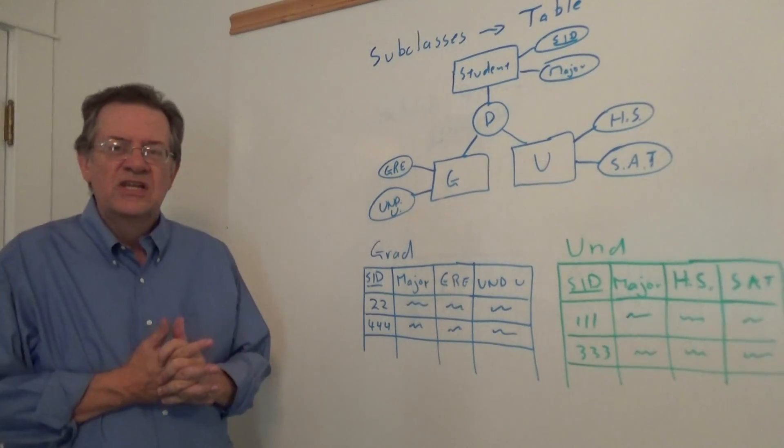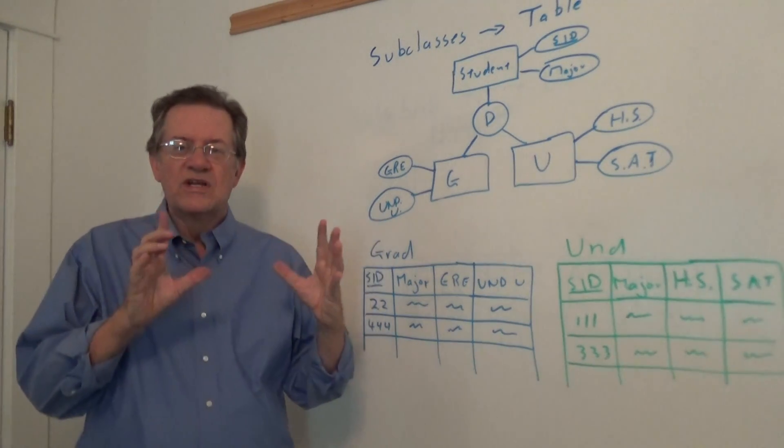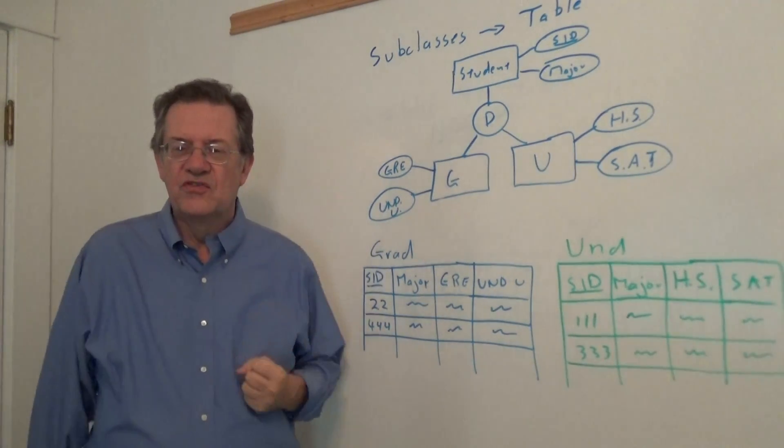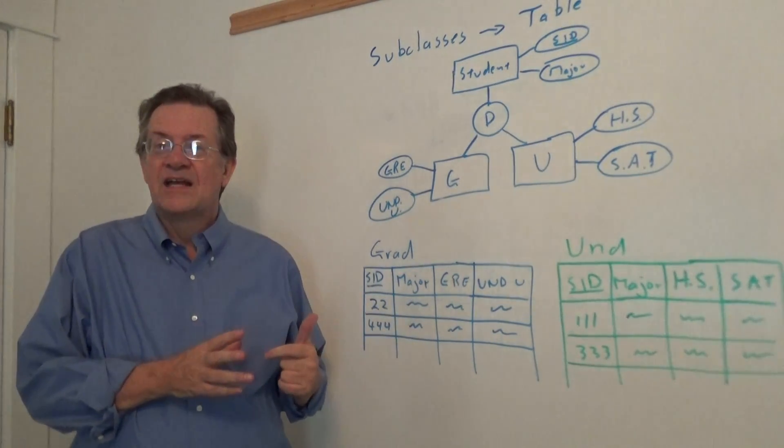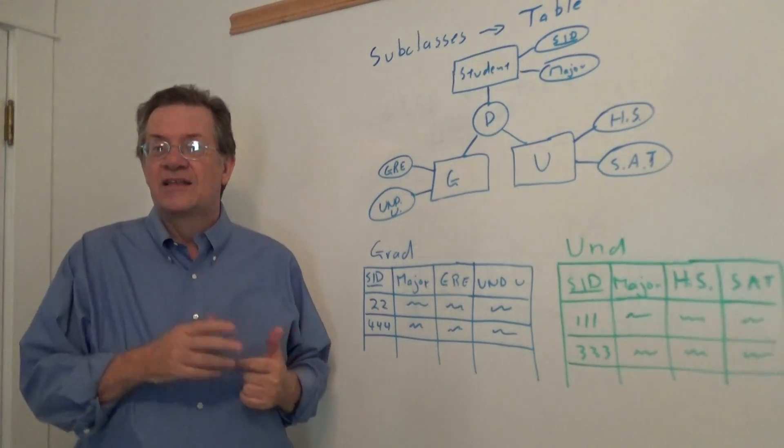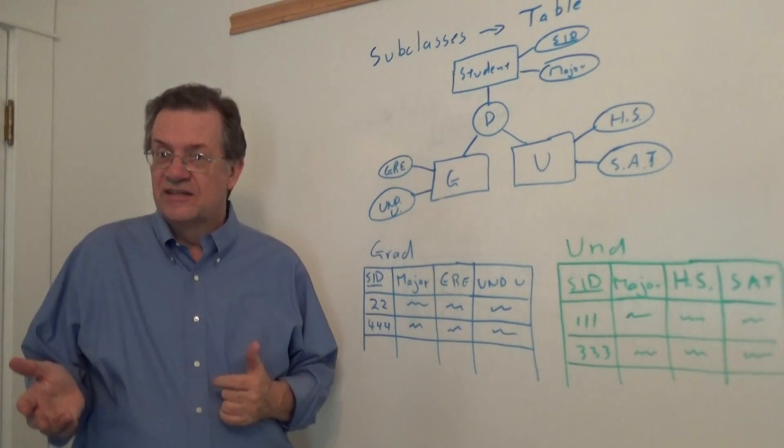So that's the second approach. Now the question is do you use one table or use two tables? I would say if you're going to be joining these tables together quite a lot then I'd recommend using one table, and the downside is you've got a lot of null values.